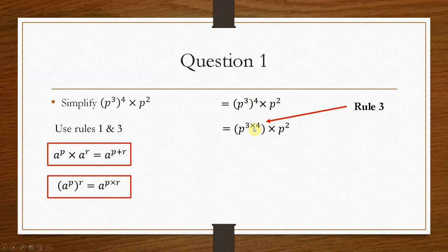So your answer would be p to the power 12 times p squared. Now, this has now become rule 1. So what we can do is, when we times them, we add the powers, so 12 plus 2, so p to the power 14. And that is your final answer for simplifying this question.